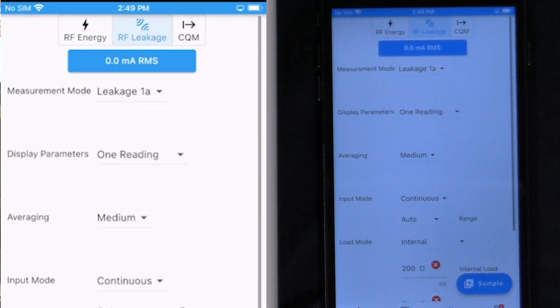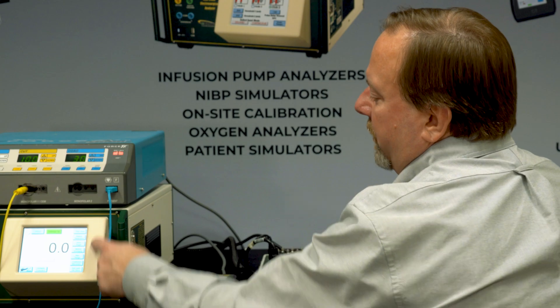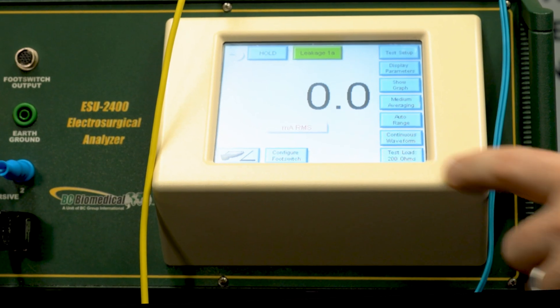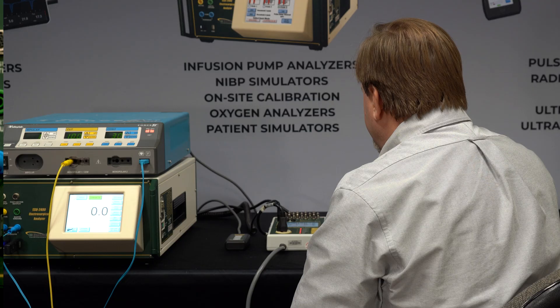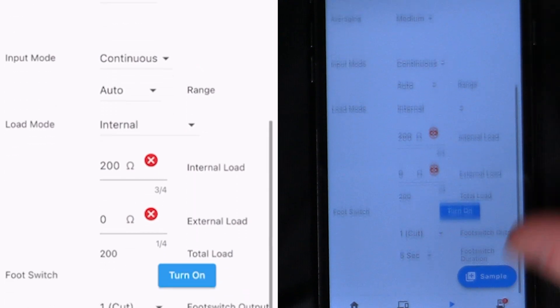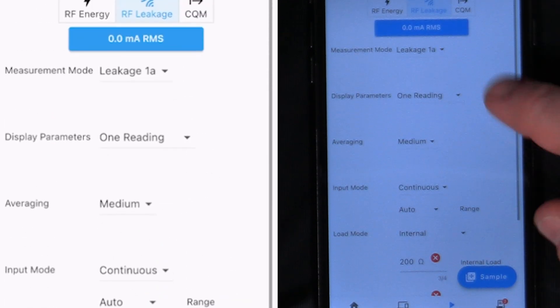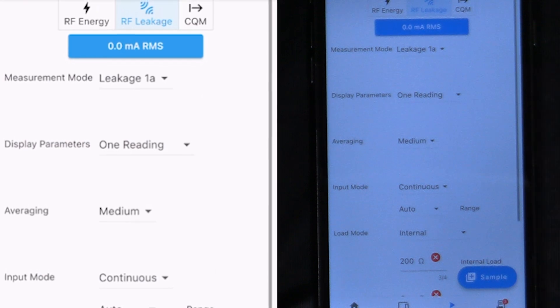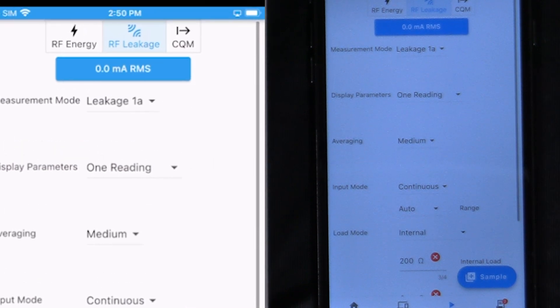The same kind of thing here. We have all of the settings available on the screen of the 2400. Those are available on the MyBC Mobile app. We can set the load, we can set the measurement mode, how many readings are on the screen. All of that is configurable right here very easily.